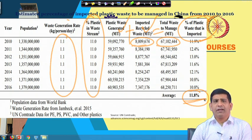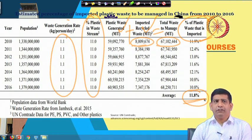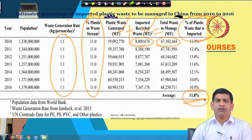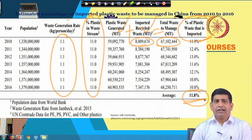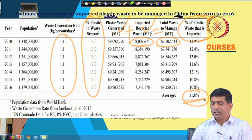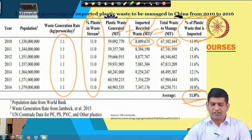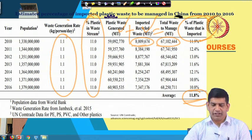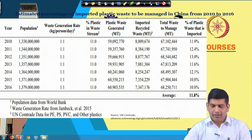So 12 percent of the plastic waste managed in China before the China Sword Ban was essentially the imported one — meaning if they were managing 100 kg, 12 kg was coming from outside China.